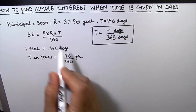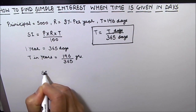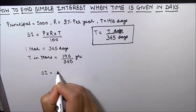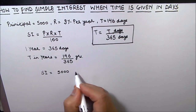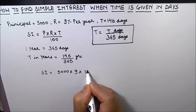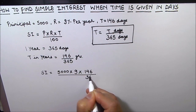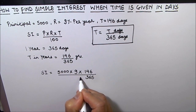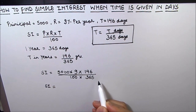Now let's put the values into the formula and find the simple interest. Simple Interest = 5000 (principal) × 9% (rate of interest) × 146/365 (time in years), divided by 100. So the denominator becomes 100 × 365.